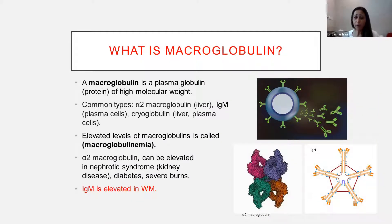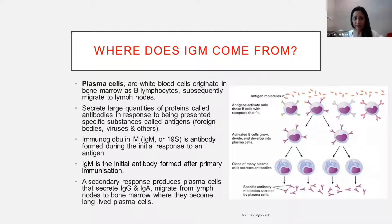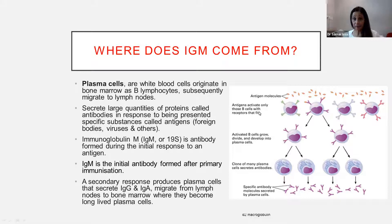Alpha-2 macroglobulin can be elevated in liver disease, kidney disease like nephrotic syndrome, diabetes, and severe burns, while IgM is elevated in Waldenström's macroglobulinemia. This IgM comes from plasma cells or lymphoplasmacytic cells — white blood cells that originate in the bone marrow as B lymphocytes.